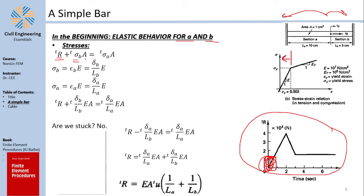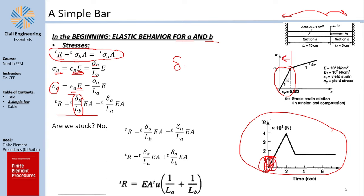The force is sigma_B times area — this is just the statics equation. Now using the elastic equation, stress at B equals strain at B times E (since we are in the linear domain), and sigma_A equals strain_A times E. Also, strain equals delta over L. Plugging in, you get delta over L times EA. From your mechanics course, the axial deformation was P = delta/L × AE.